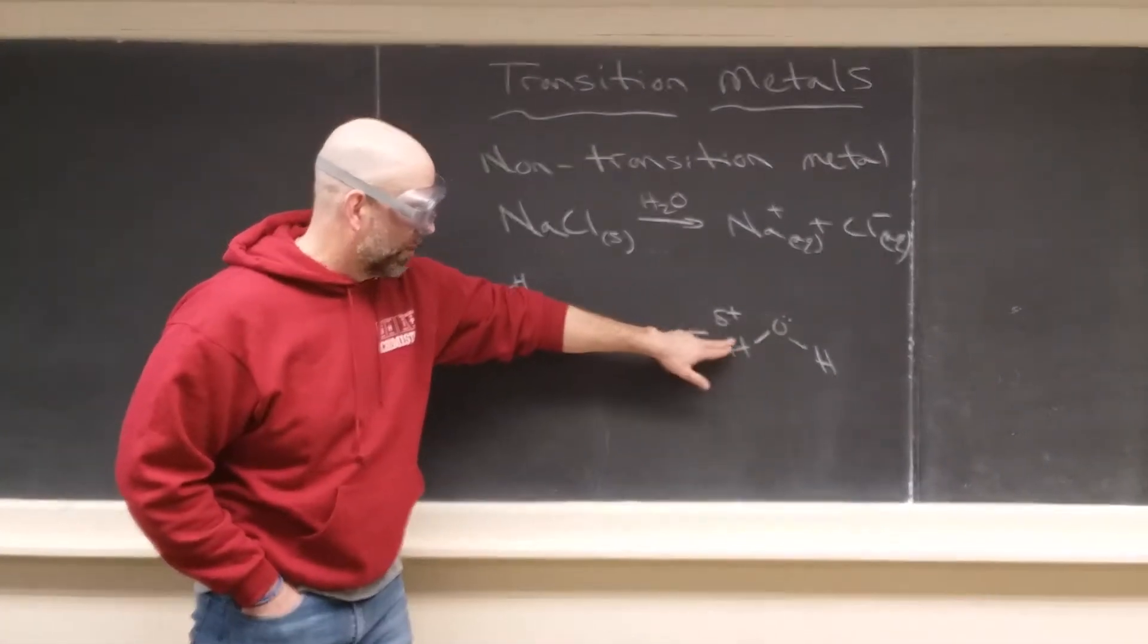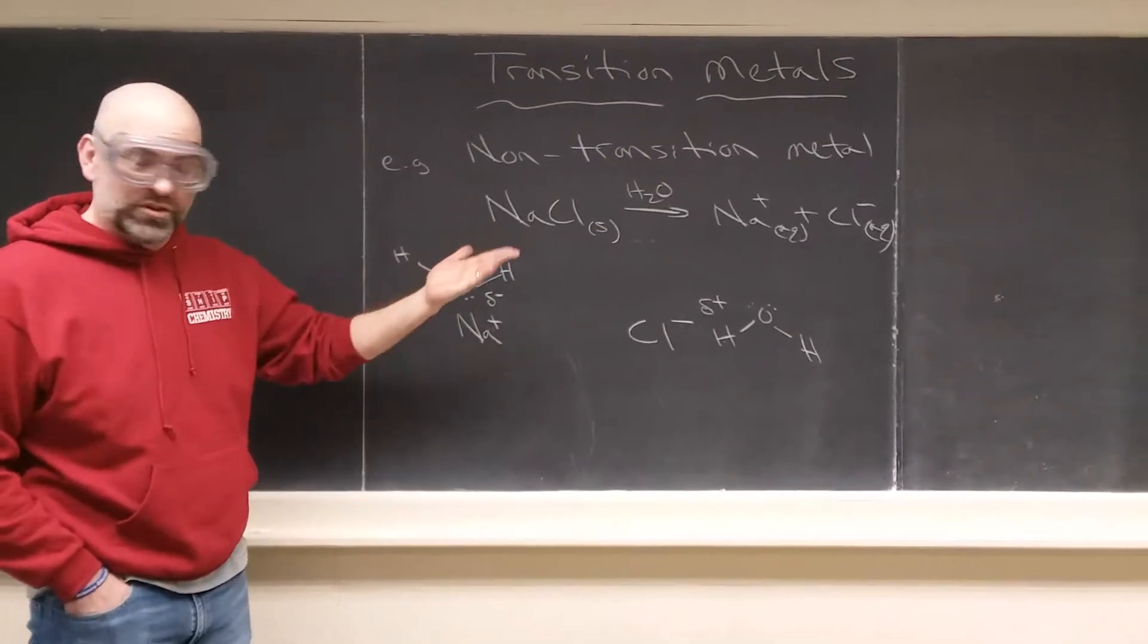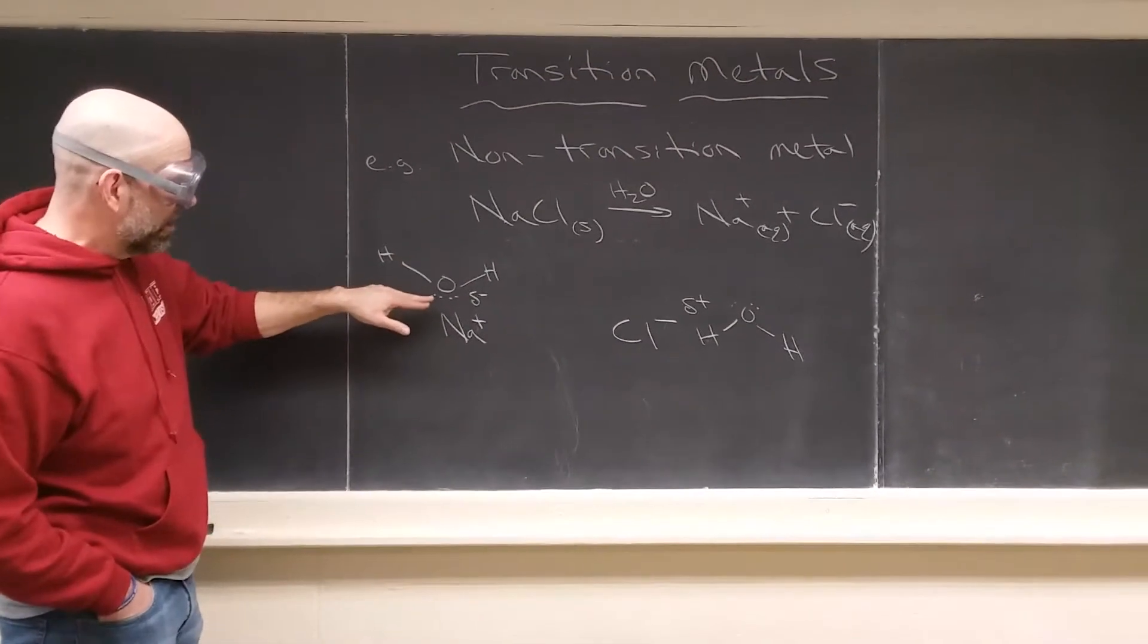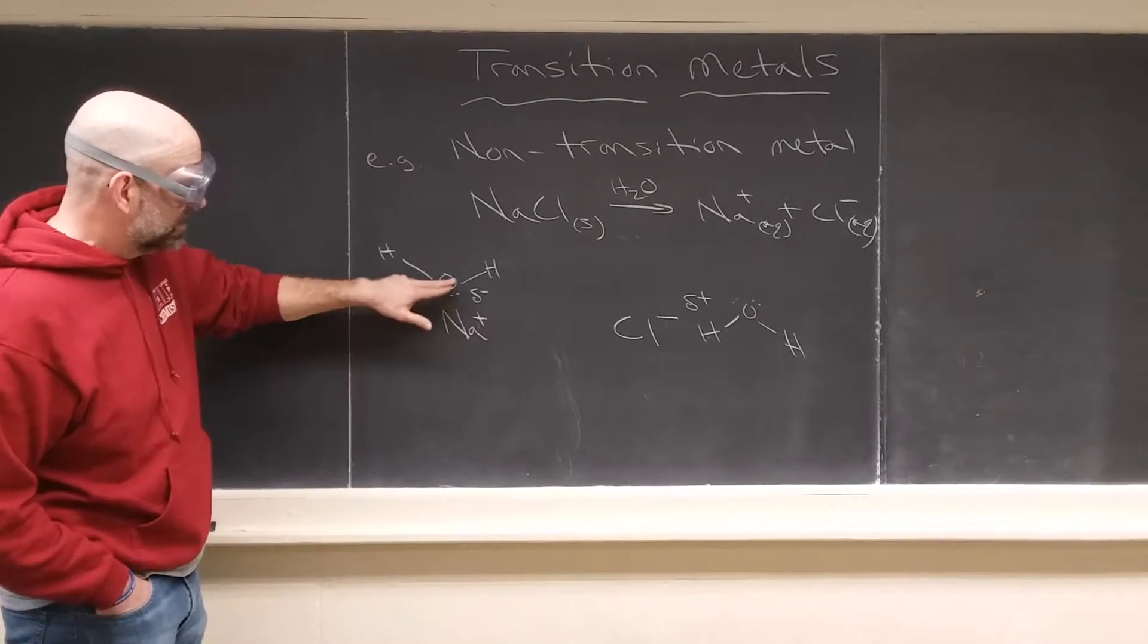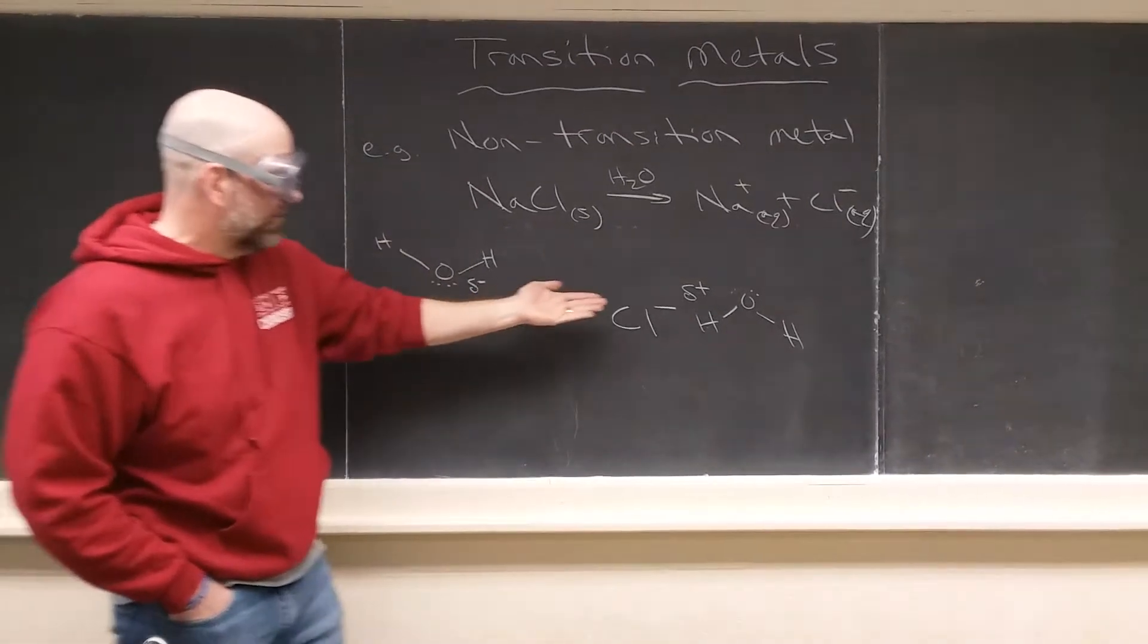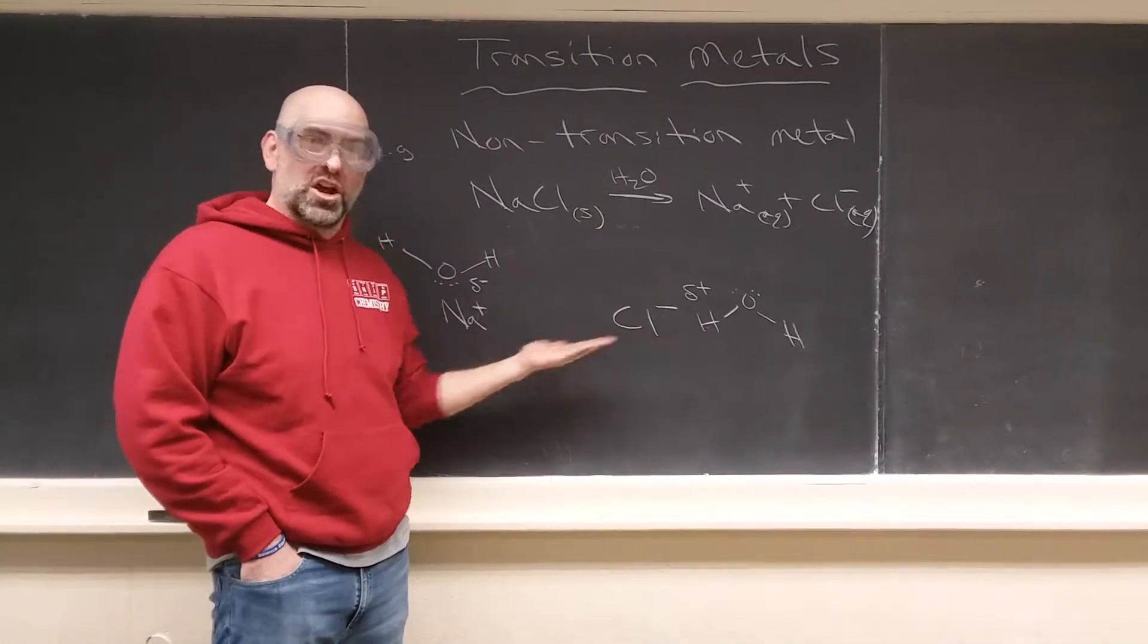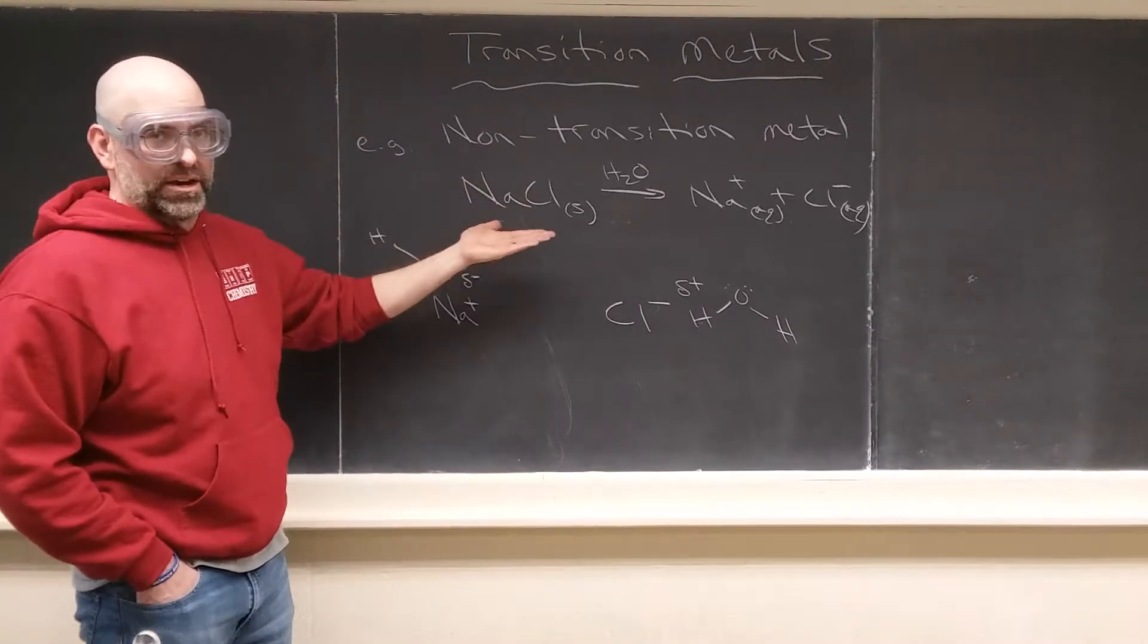Partial positive on hydrogen, partial negative on oxygen, and we'll have to review all of that. What you get there is an ion-dipole interaction between the cation and then the anion with the other side of the water, and we call those solvated ions. These are not transition metals.